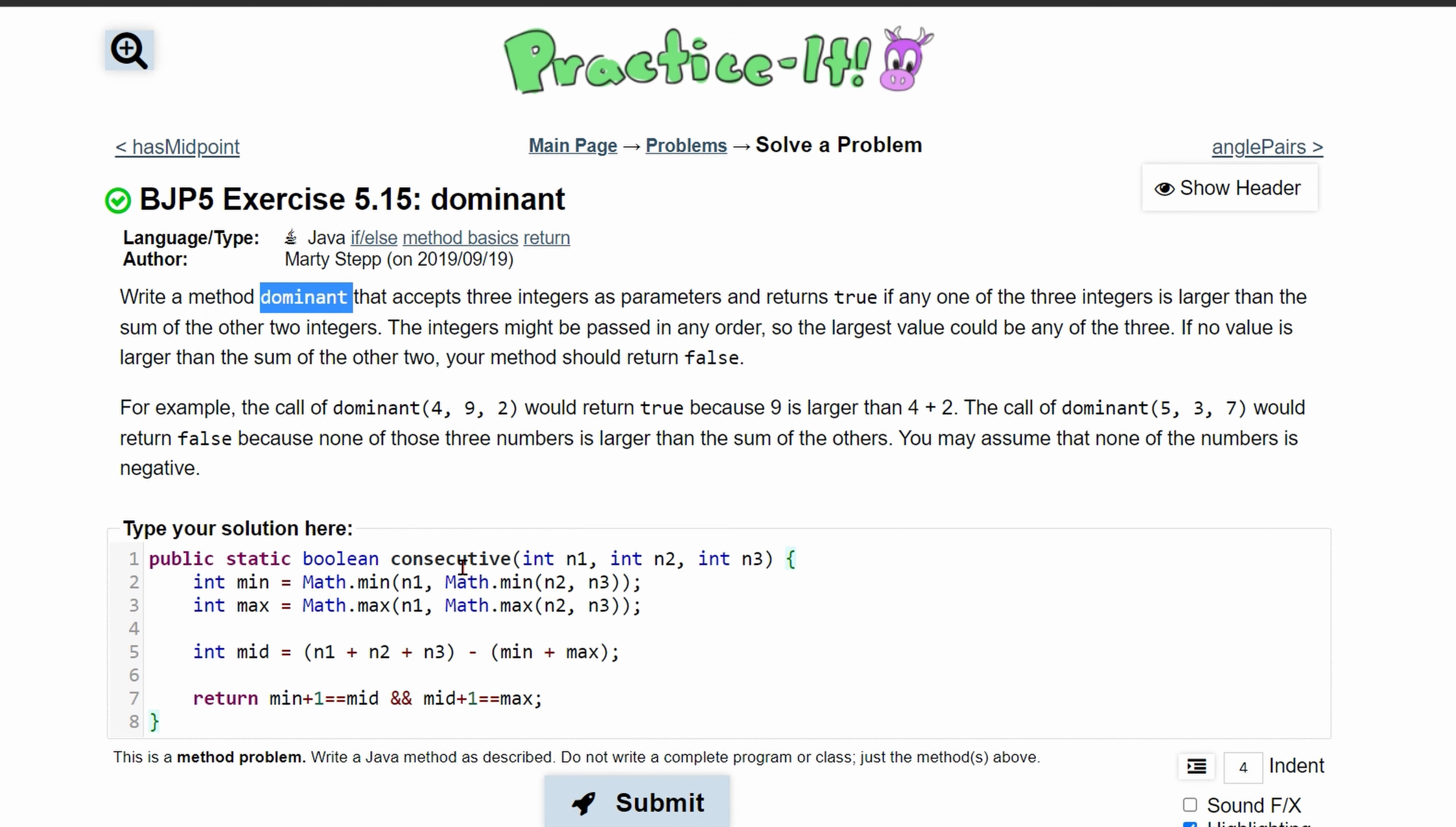There are a few things we need to change. First is the method name, which will be dominant. We're still returning a boolean and we take three integers as parameters. We're going to find the minimum of the three, the max, and the mid.